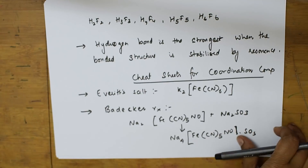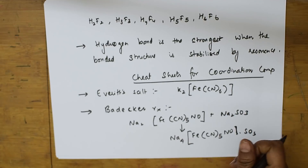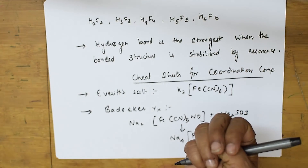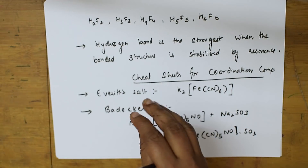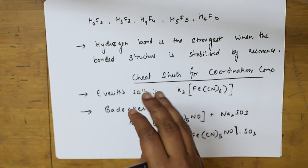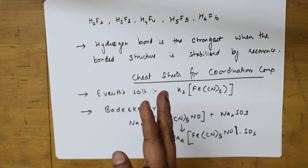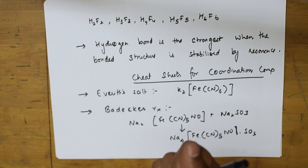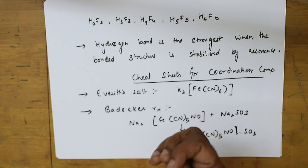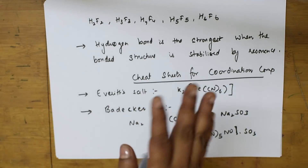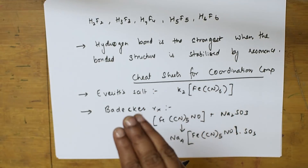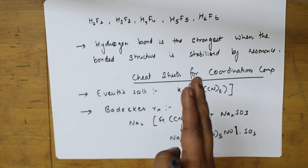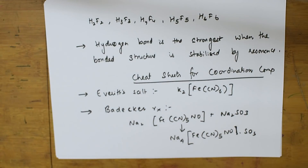Masking is a process in which a substance, without any physical separation, is transformed so that it does not enter into a particular reaction. For example, masking of copper by CN⁻ is one important concept.